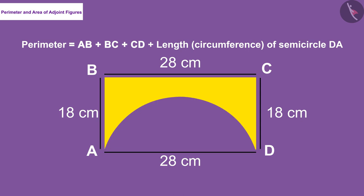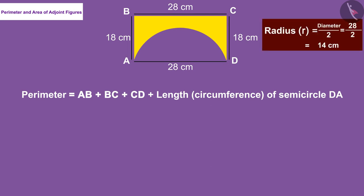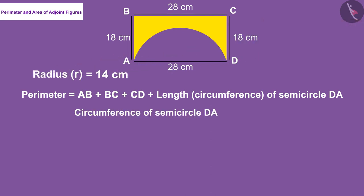Well done. The circumference of the semicircle DA can be found by the circumference of the circle. Here the value of radius will be 14 centimeter. We can see that the circumference of the semicircle DA will be half the circumference of the circle, which is 2 times pi times radius.